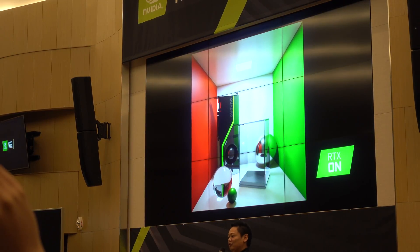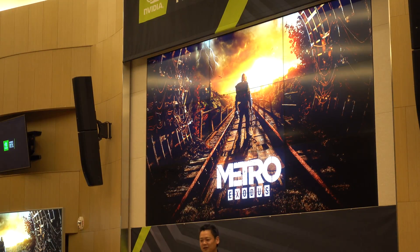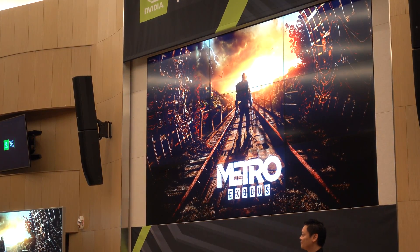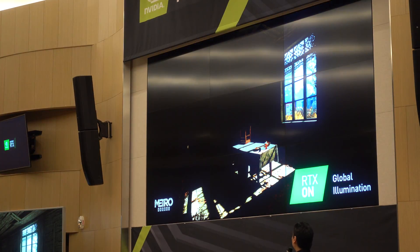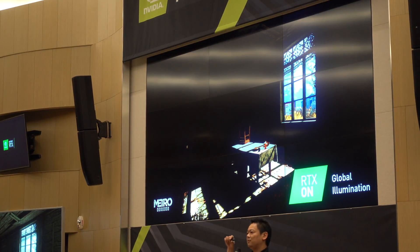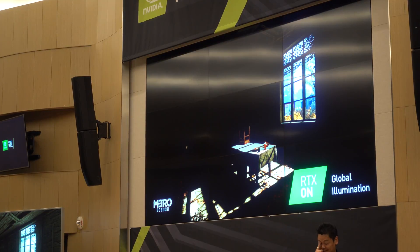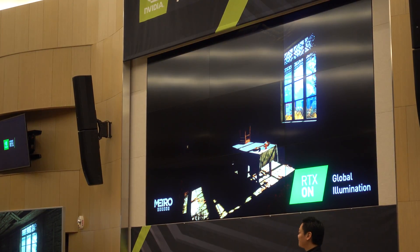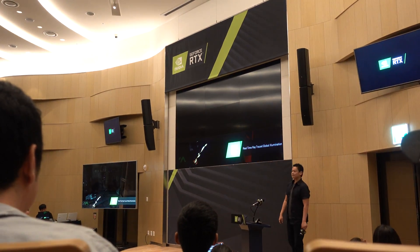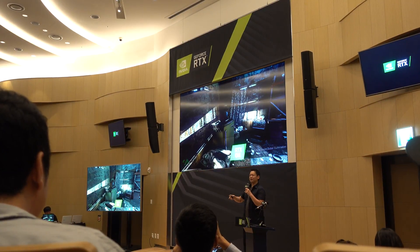To show off global illumination, one of the games coming out relatively soon — Metro Exodus — really uses global illumination in a very big way. With global illumination, the lighting looks a lot more realistic. In the past, developers needed to place fake lights within scenes to get the ambient light. You can see how Metro is using global illumination within their game.